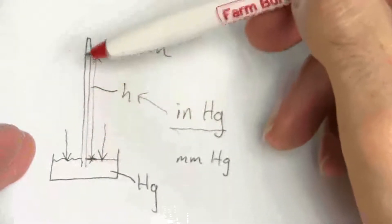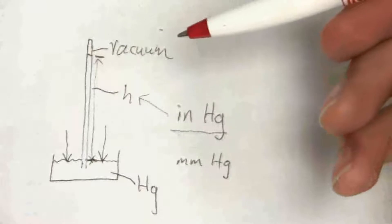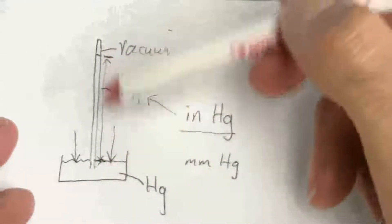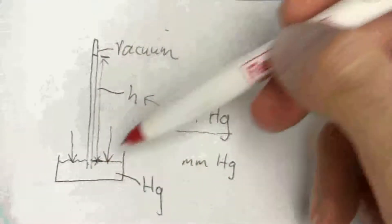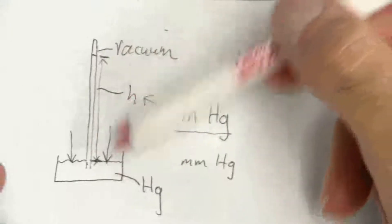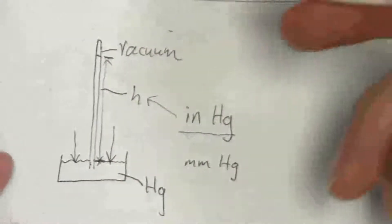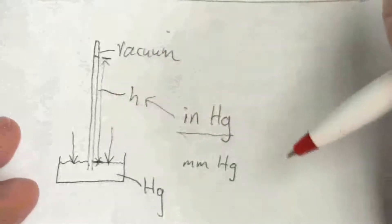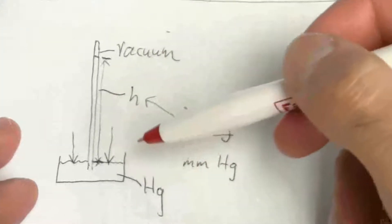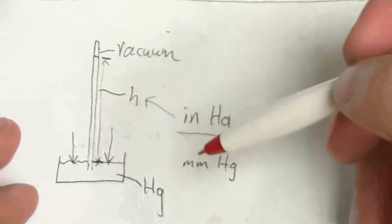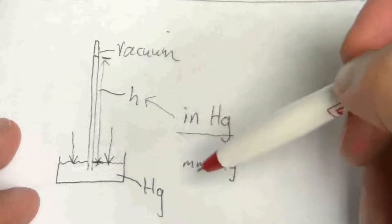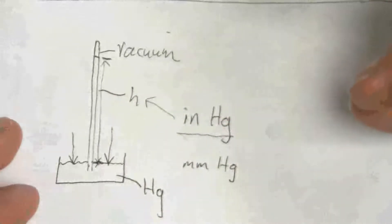which means that same column in water would weigh much less. And so that would compensate for much less of the force exerted by a low pressure. So sometimes you'll have small pressures measured in terms of inches or millimeters of water.